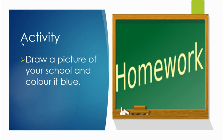Today we spoke about our school. Now here is something for you to do. You're going to draw a picture of your school, then colour it in a special colour — it's the colour of the girl's uniform. What colour is that? That's right — blue. So you will draw a picture of your school. Remember, there are three big buildings and there's a bridge. Draw a really nice picture, then colour it blue.